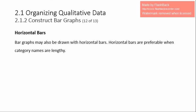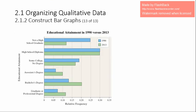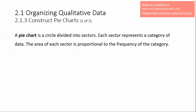We call that a horizontal bar graph. Bar graphs with horizontal bars are usually preferred when the category names are lengthy, as it provides more space to write out the categories.